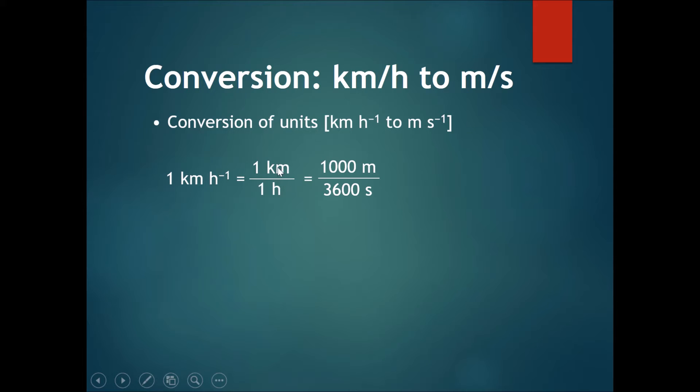One km equals one thousand meters and one hour equals three thousand six hundred seconds. After we do this division we should quite easily get 0.278 meters per second.